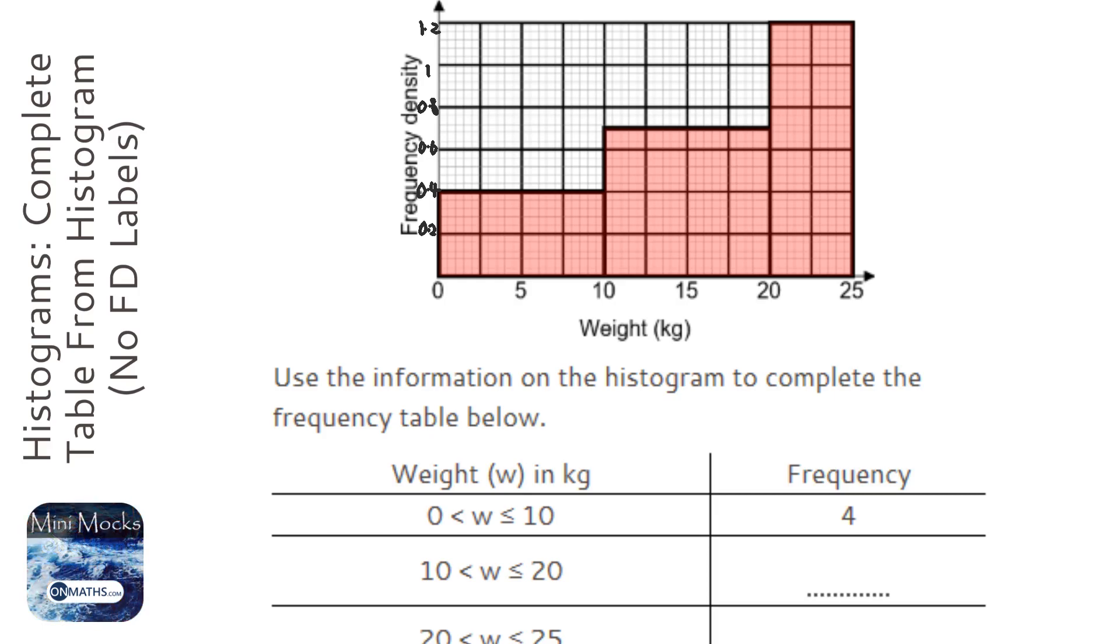A different way of doing it is counting the squares. So in the first box we've got 1, 2, 3, 4, 5, 6, 7, 8 squares. So there's 8 squares, which equals a frequency of 4. So therefore each one frequency is 2 squares.